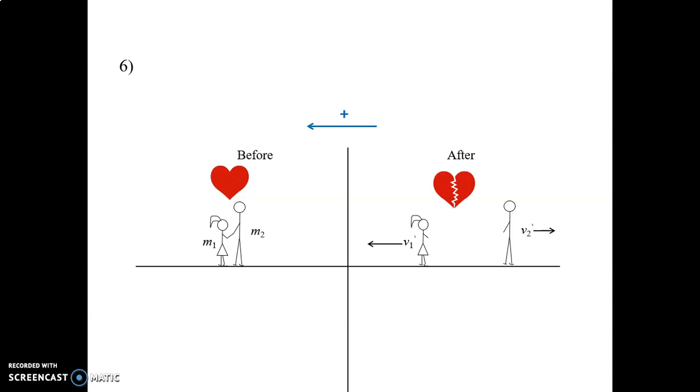Now remember, everything in momentum is vectors, and so we're going to need to establish a positive direction. Also, maybe you want to draw their broken heart. It's completely arbitrary which we call the positive direction. So for purposes of this, let's say, for example, left is the positive direction. And now we write out the law of conservation of momentum. And notice what I'm doing here. I'm putting the equal sign right there on the dividing line. So m1v1 plus m2v2 equals m1v1' plus m2v2'.